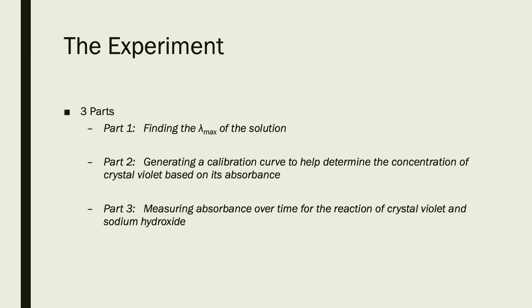The third part is measuring absorbance over time, which is a prelude to next week's lab on kinetics. Kinetics is all about how concentrations change over time. We do a reaction with crystal violet and sodium hydroxide, and you can actually see the color change visually over time. By measuring exactly how that color is changing via absorbance over time, we get concentration versus time data that we can apply next week to get kinetic information about this reaction. It's neat that we can see immediate applications of Beer's Law beyond just measuring concentration — we can actually track reactions in real time.